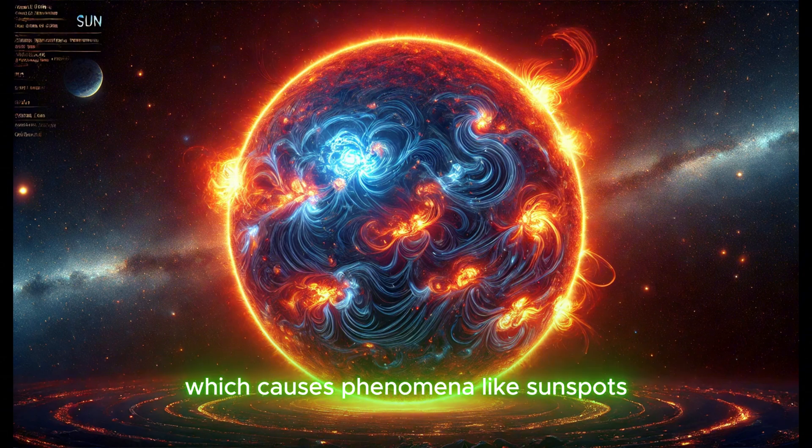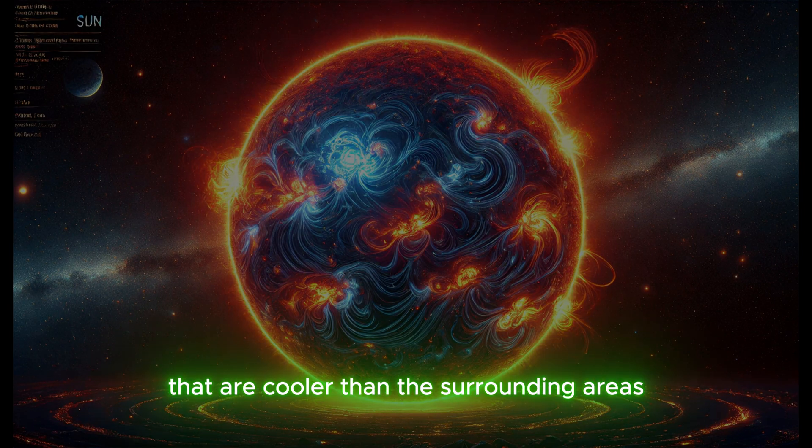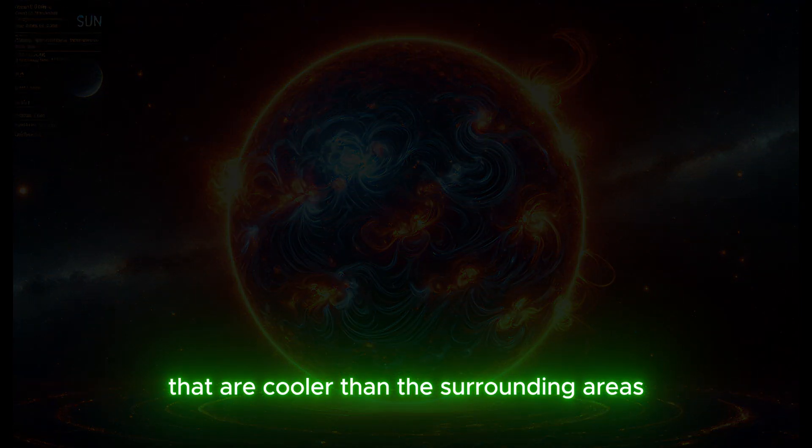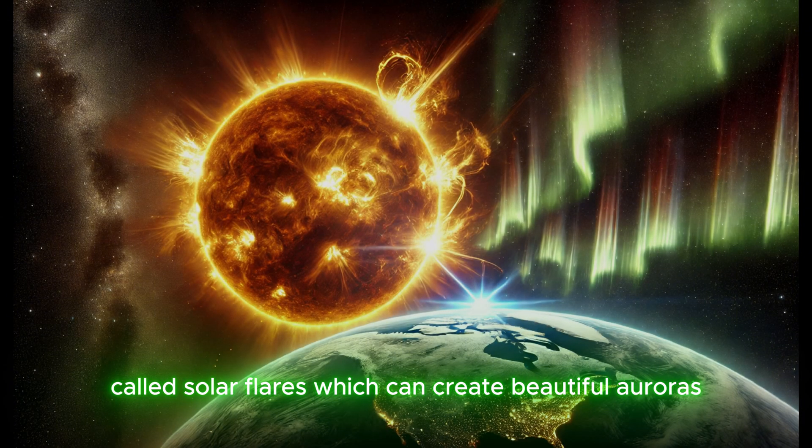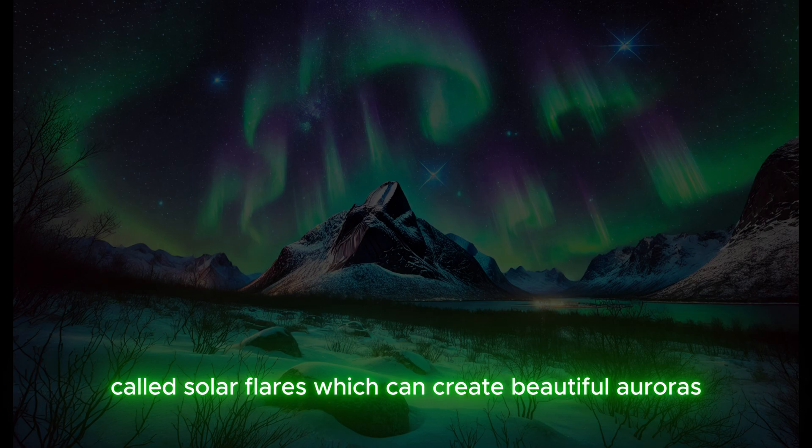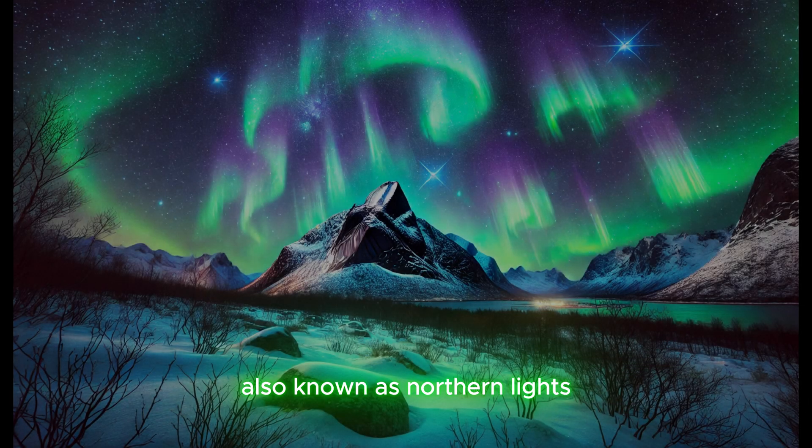The sun has a magnetic field, which causes phenomena like sunspots, dark spots on the surface that are cooler than the surrounding areas. The sun also releases bursts of energy called solar flares, which can create beautiful auroras, also known as northern lights.